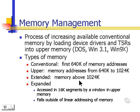1024K, by the way, is also one megabyte of memory. Then we have what's called expanded memory. Expanded memory is a totally different type of memory — it's actually accessed in 16K segments by a window in upper memory, and it falls outside of any kind of linear addressing of memory. We'll talk about expanded memory in just a few minutes.